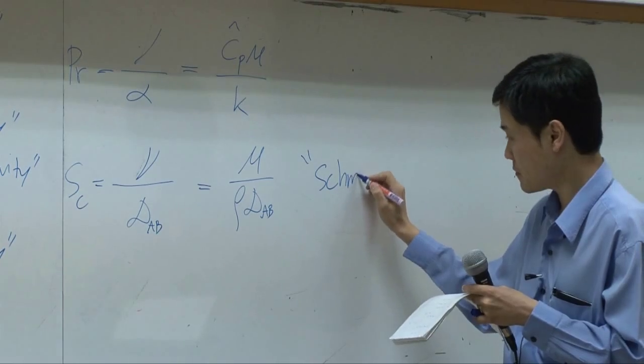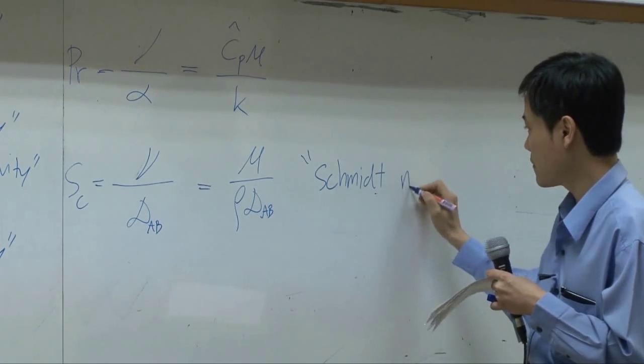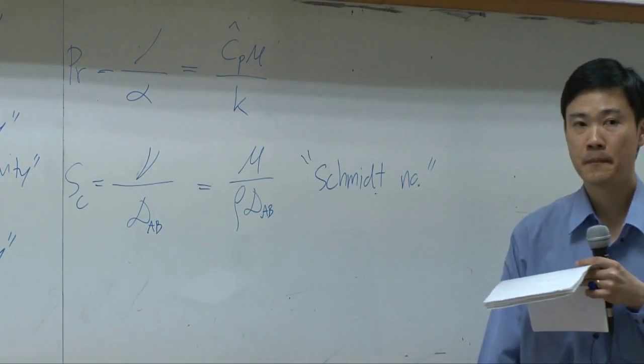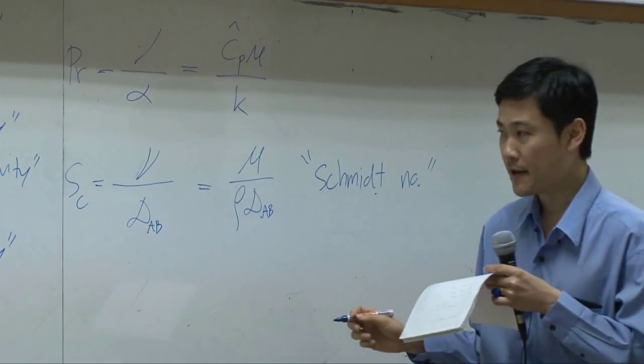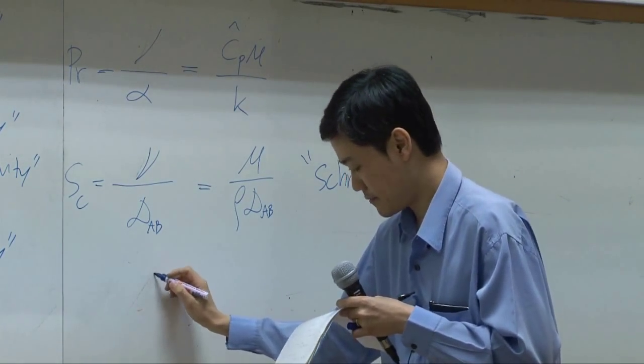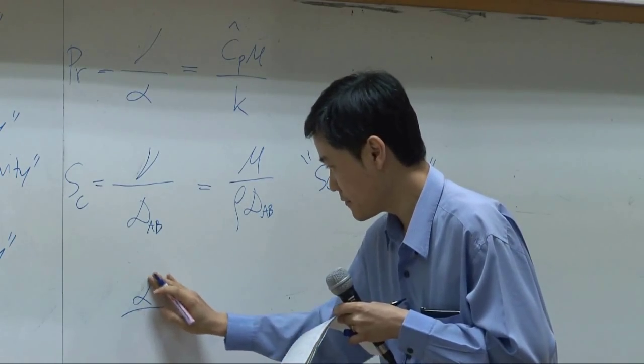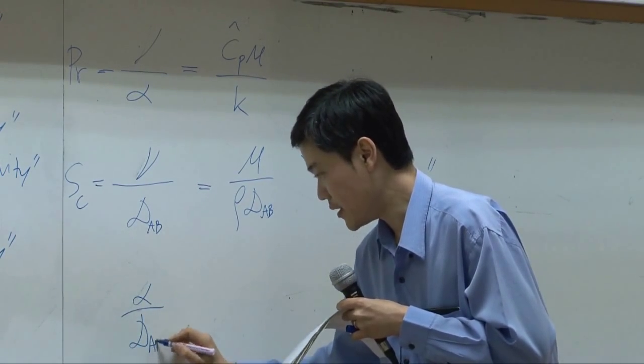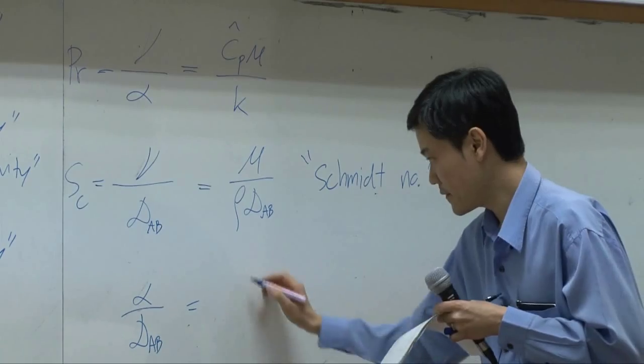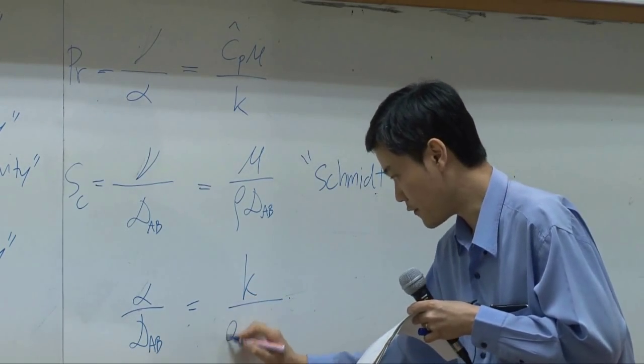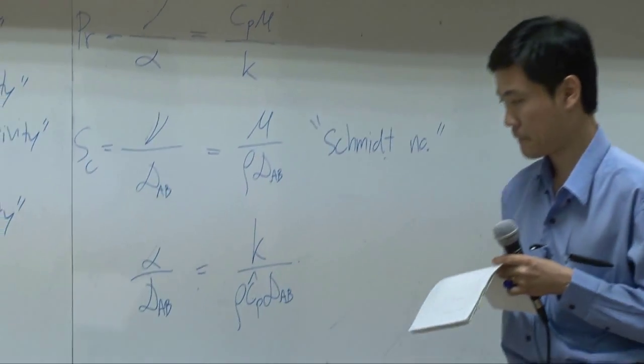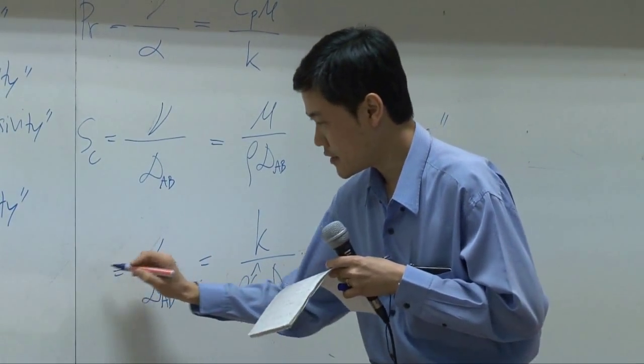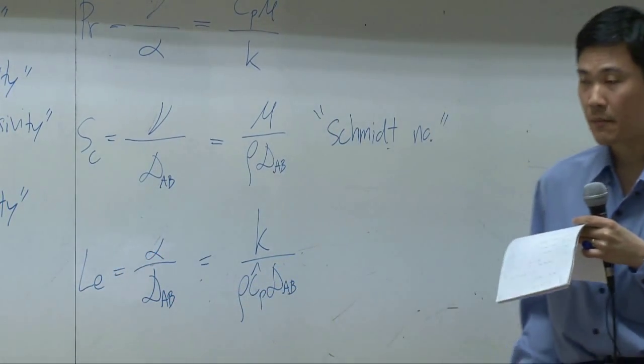On the other hand, if I take alpha divided by DAB, you get K over rho CP DAB. This is called Lewis number.